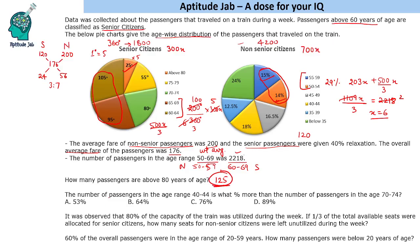Next question: the number of passengers in the age range 40 to 44 is what percentage more than the number of passengers aged 70 to 74? Age 40 to 44 is the yellow segment — 18% of 4200 = 756. Age 70 to 74 is the green segment — that gives 400. So it is 356 more upon 400, which gives 89% as the answer.